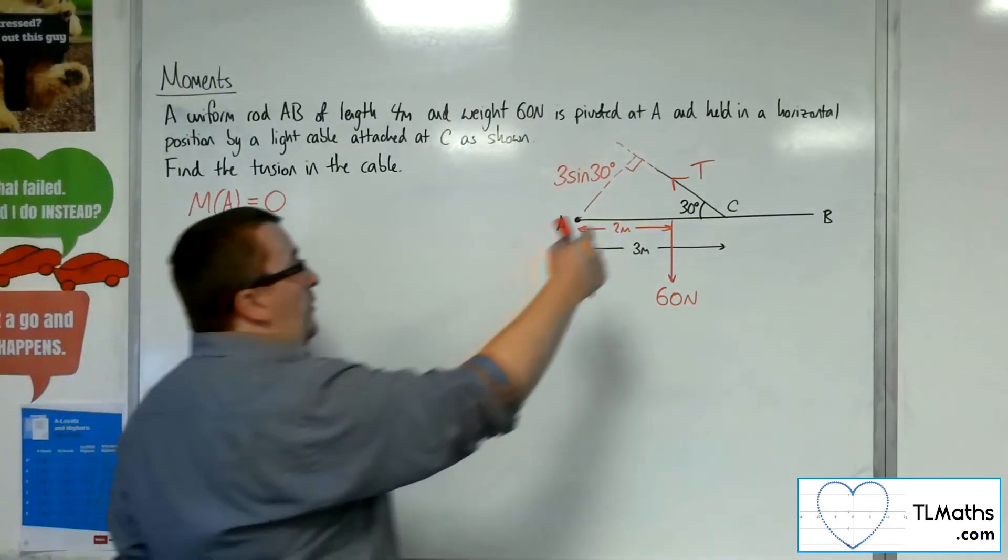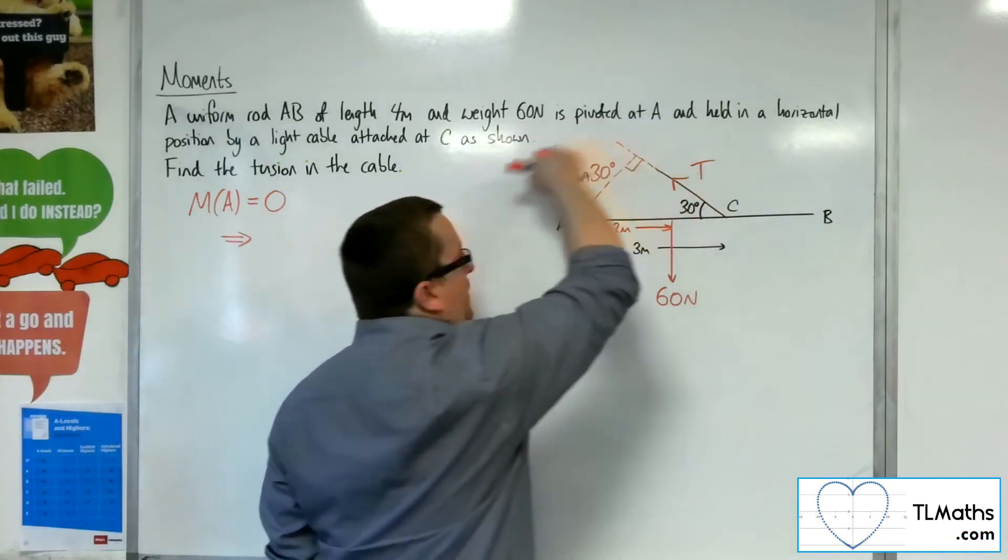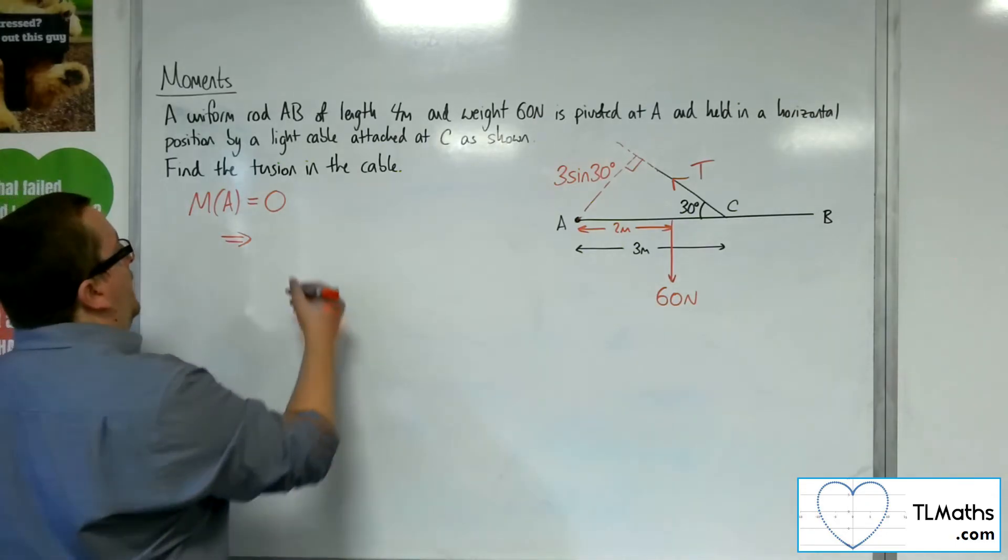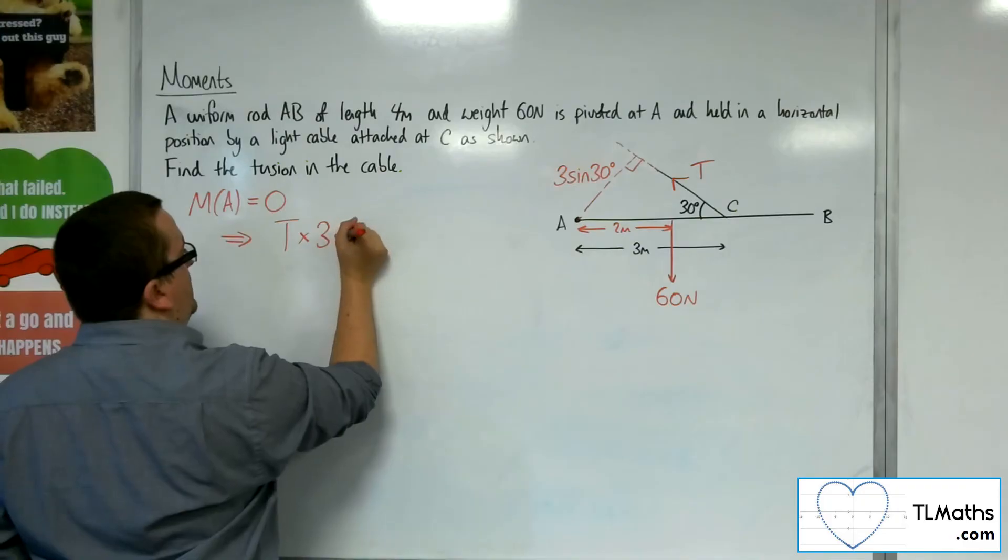Because the tension is going in that direction, rotating around that way, that's anticlockwise, and so that's positive. So we're going to have T times the distance, 3 sine 30.